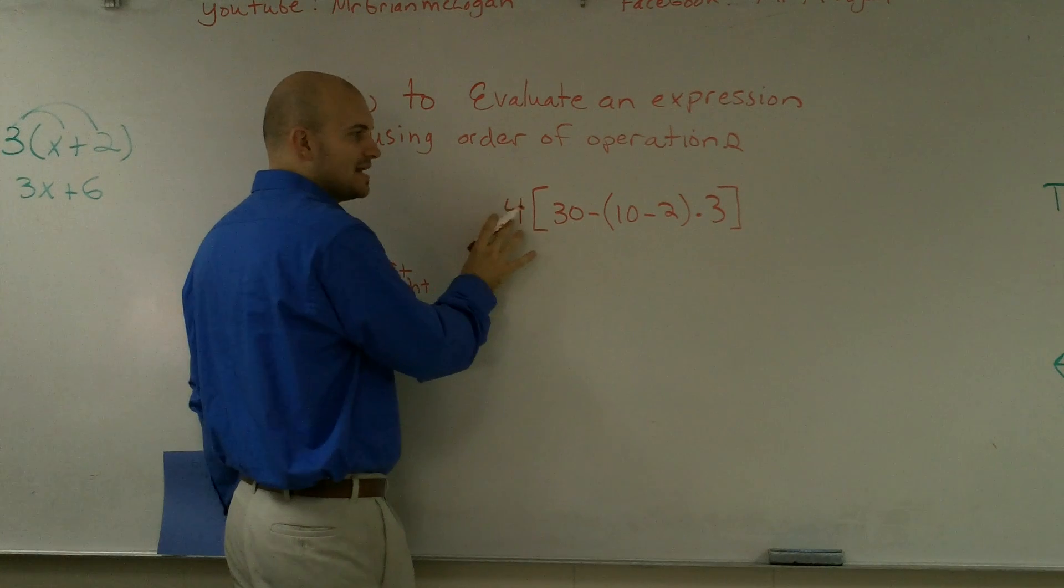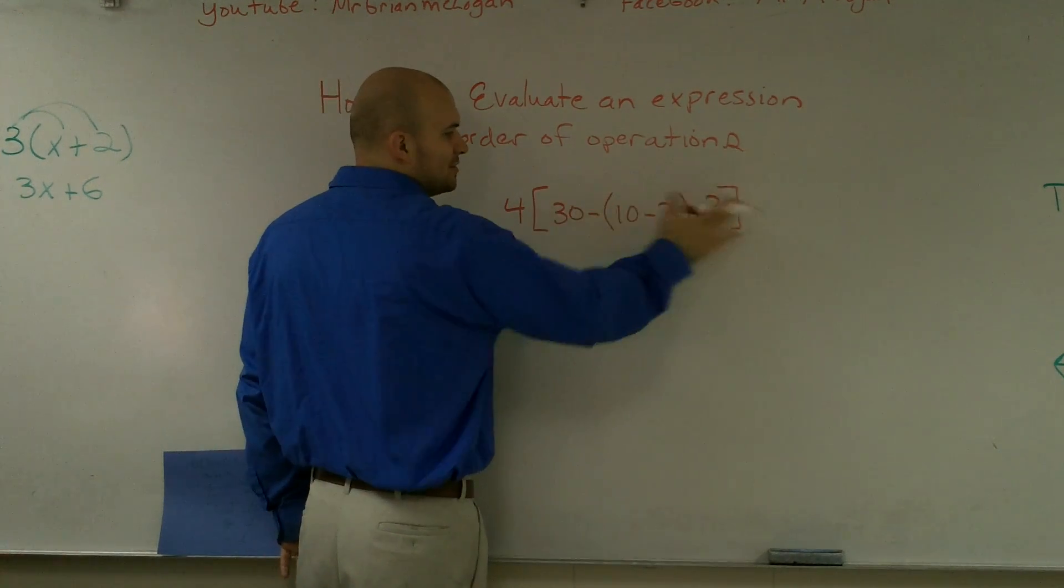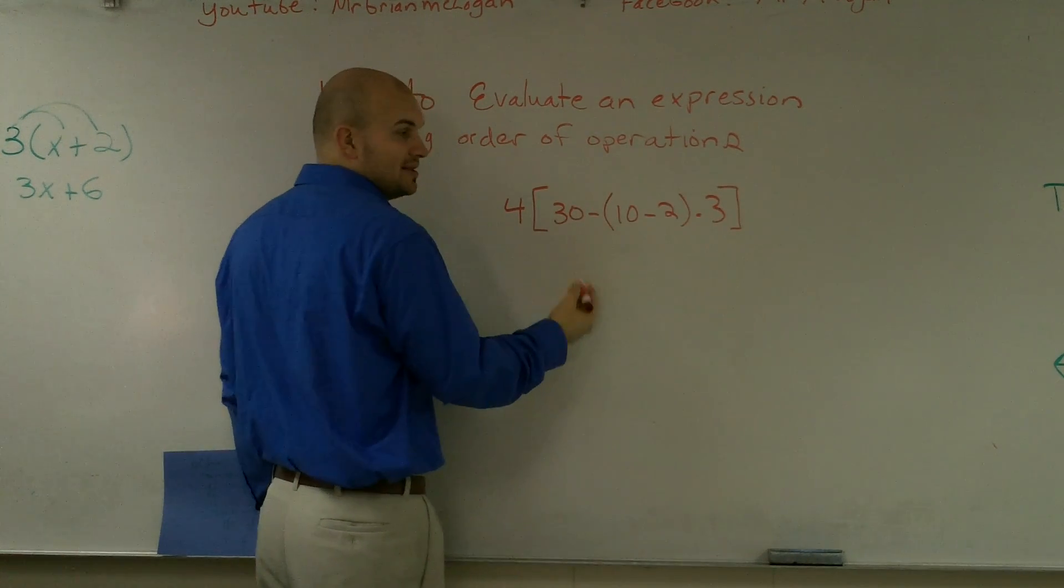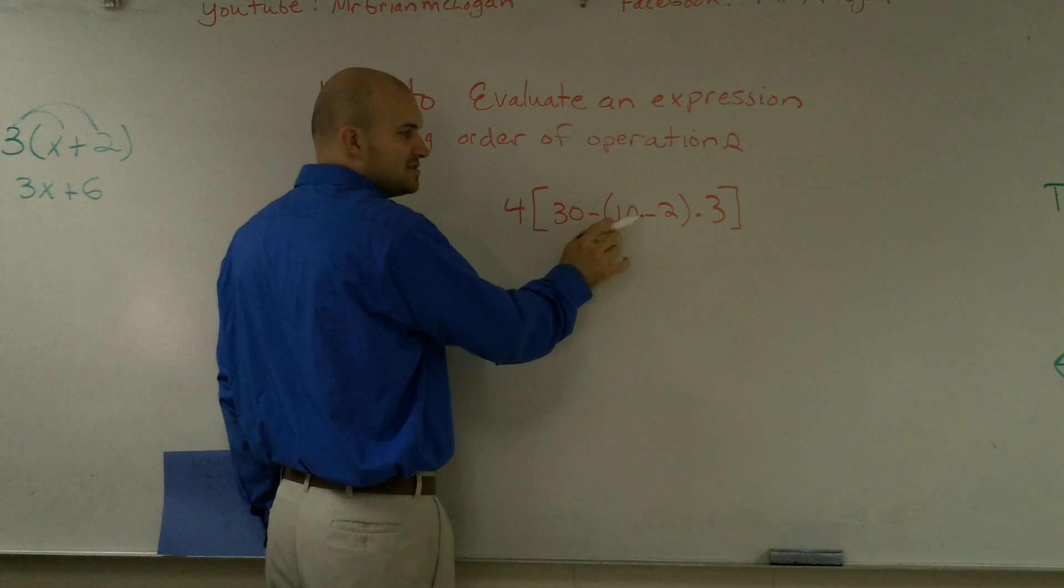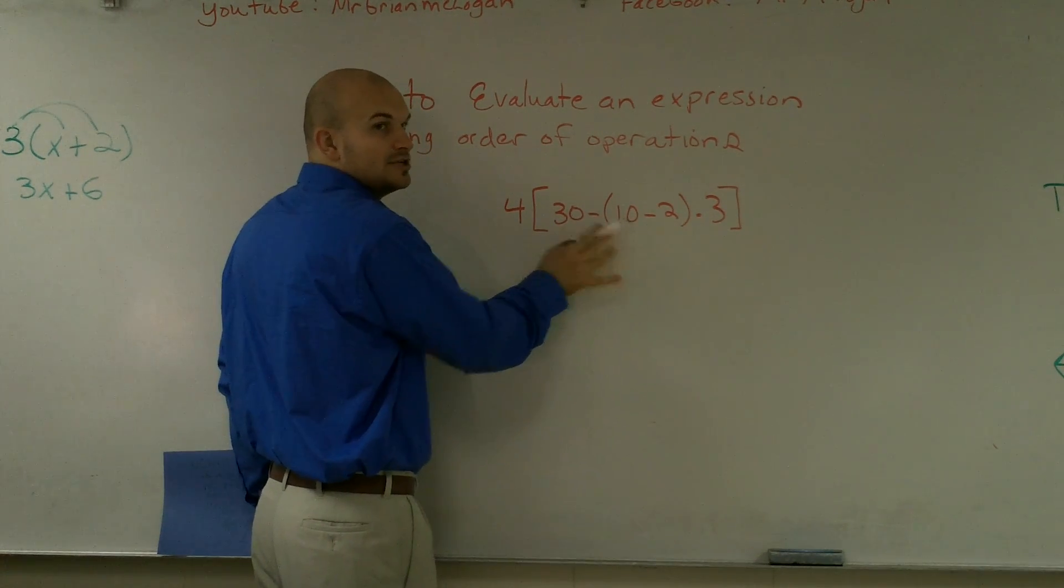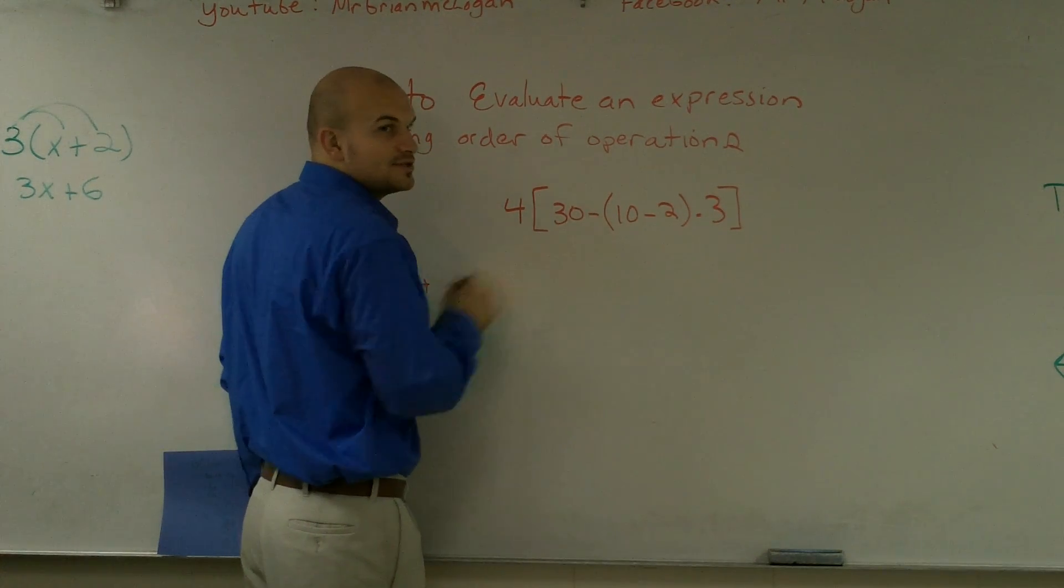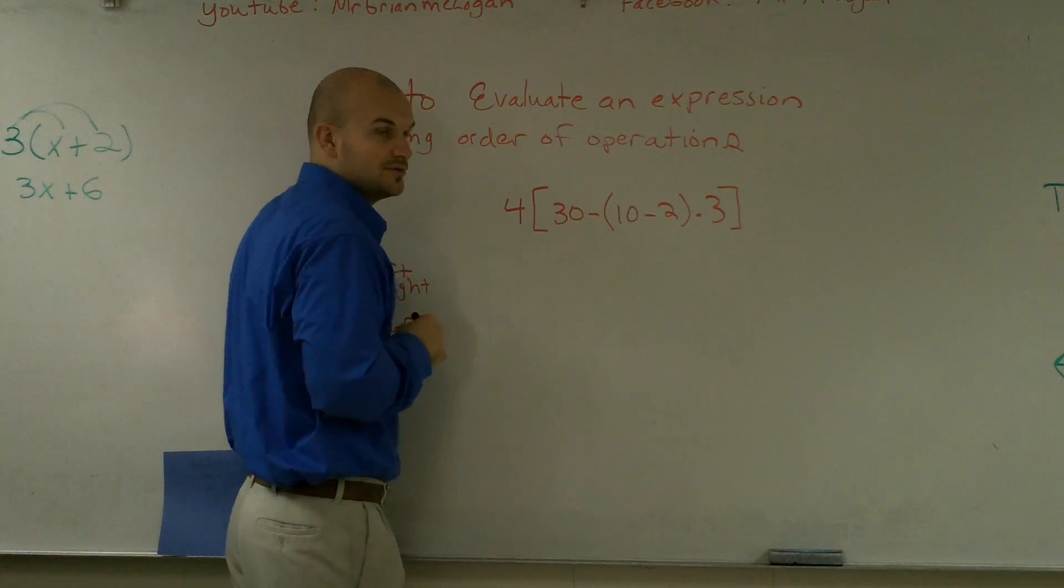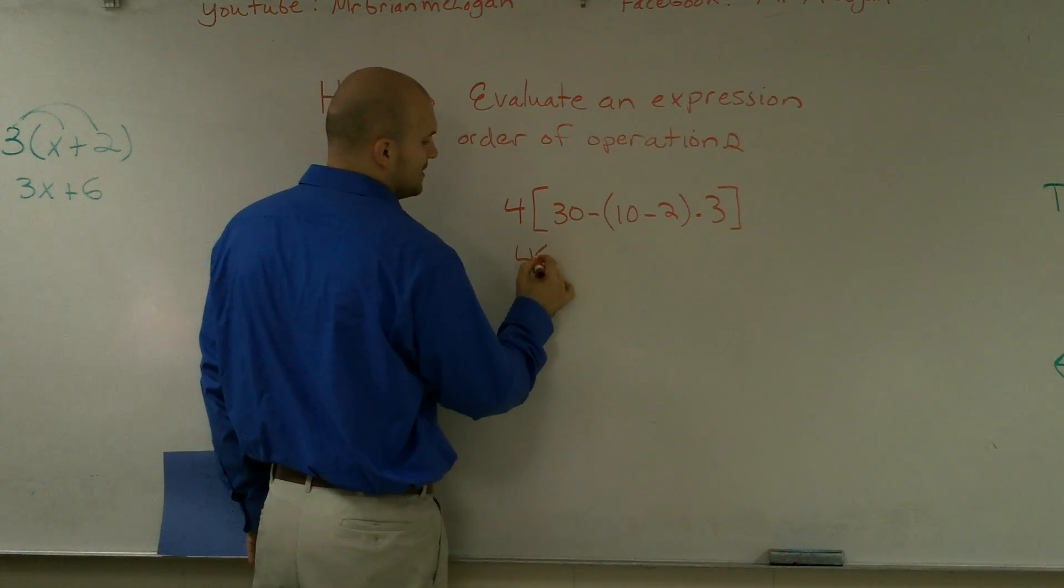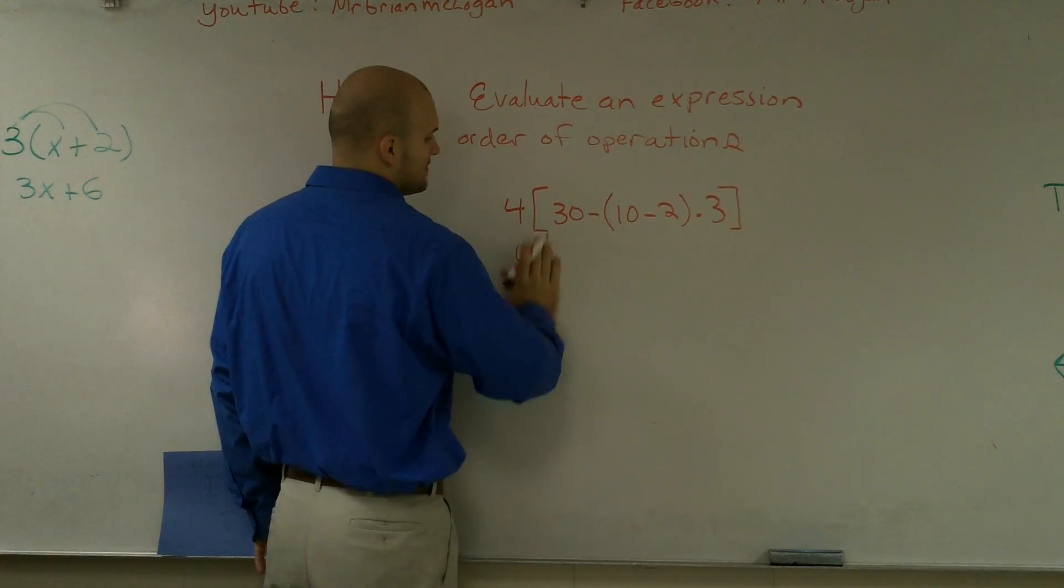I'm not going to be concerned with this 4 because it's outside of my brackets. Then I'm going to look inside here and I have another set of parentheses. And I notice that this is going to be the first thing I'm going to do because this is the innermost parentheses. So therefore I'm going to do this operation first, I'm going to do 10 minus 2. So I'm just going to rewrite this step by step so you guys can see.